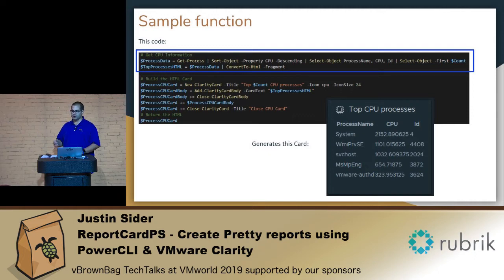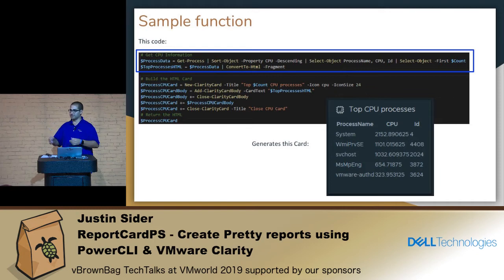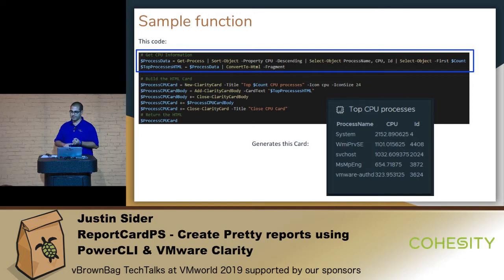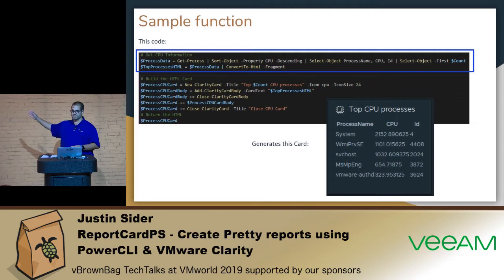So a sample function — I removed all the comment-based help, but what you see here is a pretty simple thing. We have a one-liner that's capturing CPU data from my machine, and then I'm converting it to HTML. From my aspect, when you look to build cards, this is what you're responsible for: a one-liner and convert it to HTML. Building the HTML card below that is where I'm using the ClarityPS module to create the card, give it a title, you can add icons, and then you're just closing the body and returning that back to the HTML document. You can see that one line of code essentially creates this cool little card.